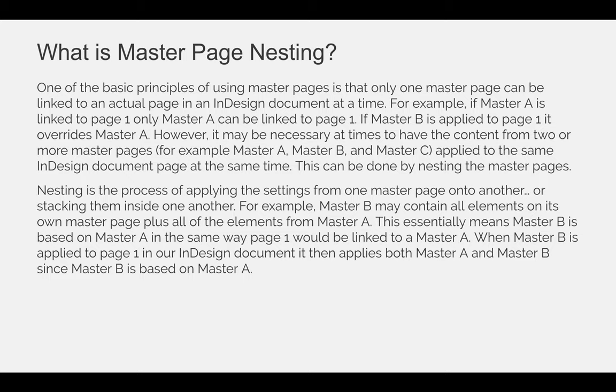Nesting is the process of applying the settings from one master page onto another, or stacking them inside one another. For example, Master B may contain all elements on its own master page plus all of the elements from Master A. This essentially means that Master B is based on Master A, in the same way that page 1 would be linked to Master A. When Master B is then applied to page 1 of your actual document pages, it applies both Master A and Master B because Master B contains all the elements from Master A.